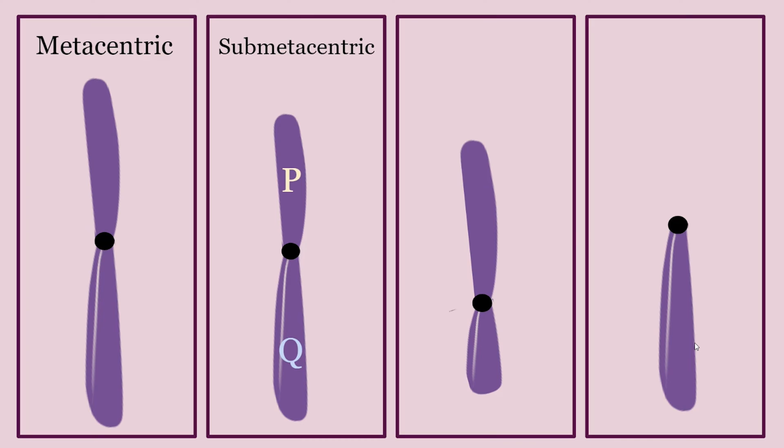If the p-arm is very small compared to the q-arm, then the chromosome is acrocentric. If there's no p-arm, then it's telecentric because the centromere is at the telomere, which is the last part of the chromosome.